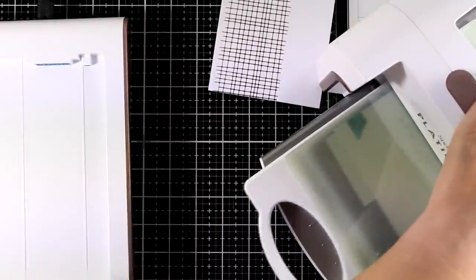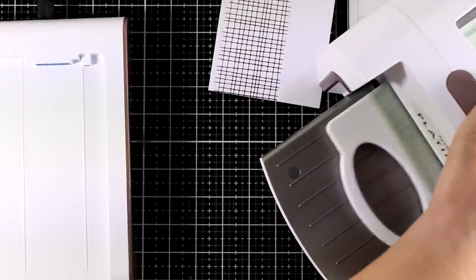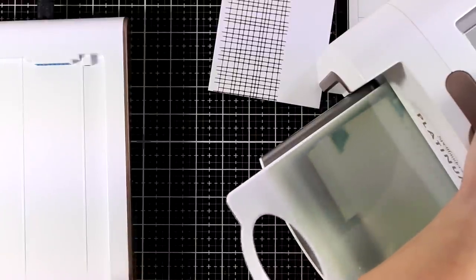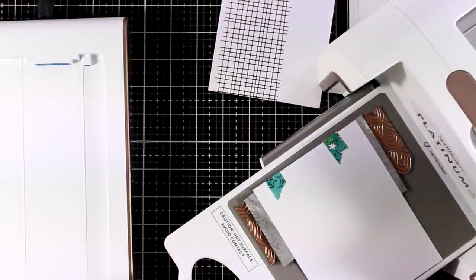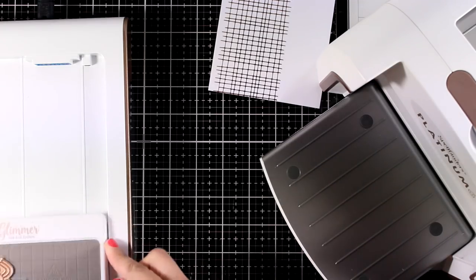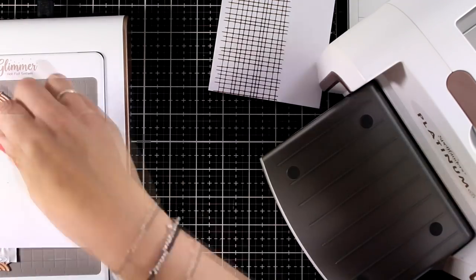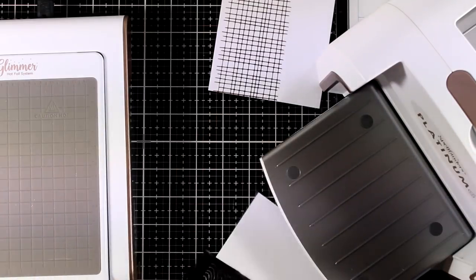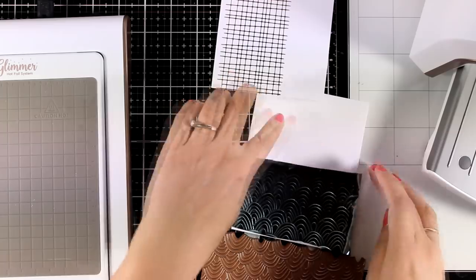Now for the next one I'm using the waves I'm going to run them through my die cutting machine just to add some pressure. I always like to put my platform back into the machine this way I can keep it nice and warm ready for the next foiling and let's peel off together that foil and see what happened.